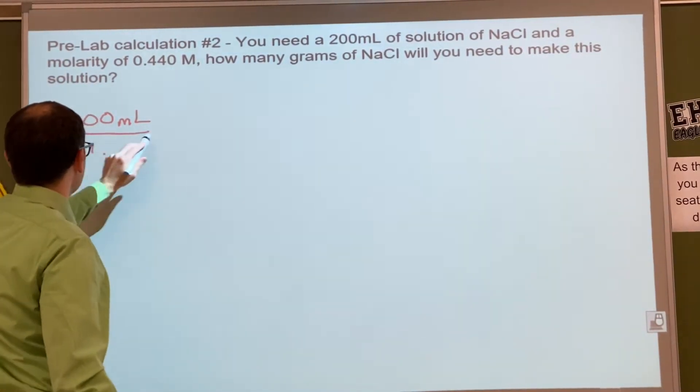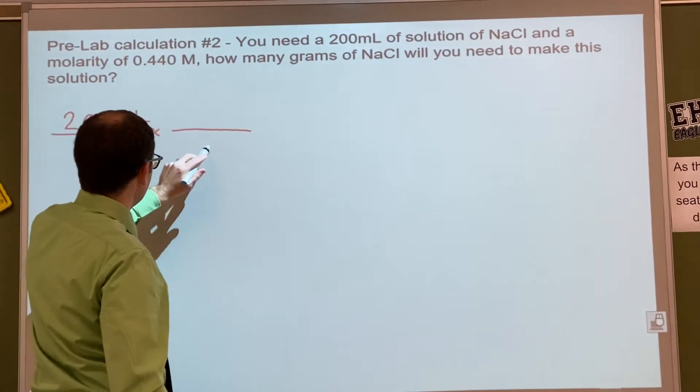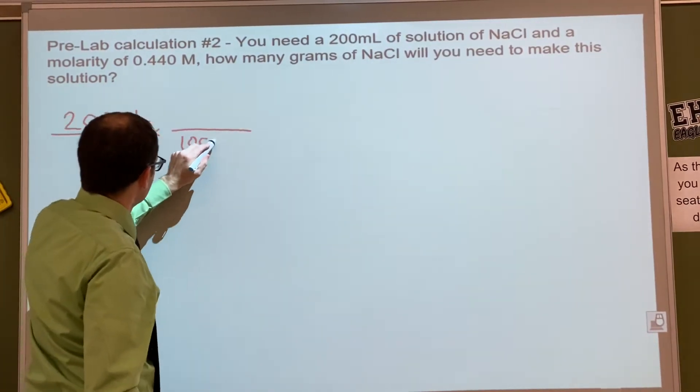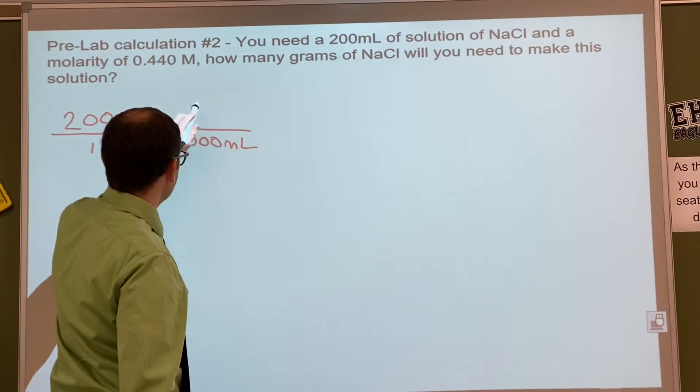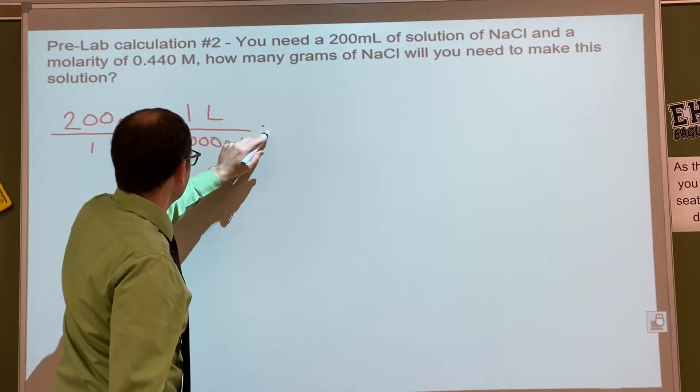What do we have to convert 200 milliliters into first? Liters. Good. So what do we put on the bottom? 1,000 milliliters. Good, 1,000 milliliters. On the top? One liter. One liter, okay.